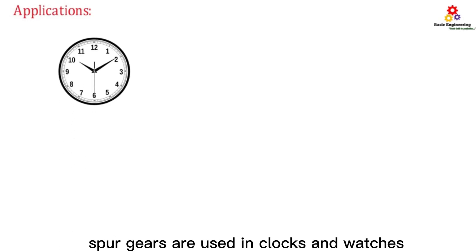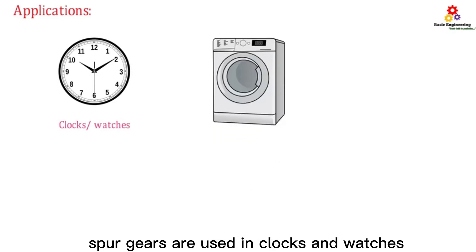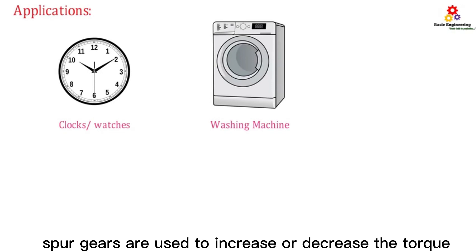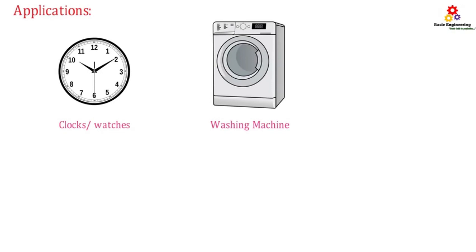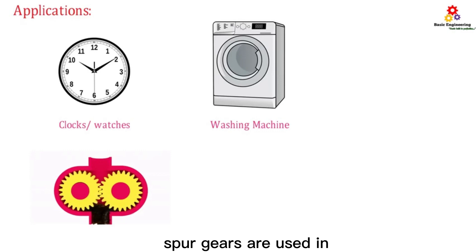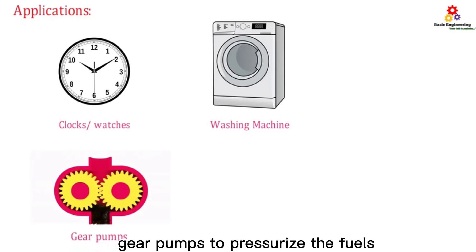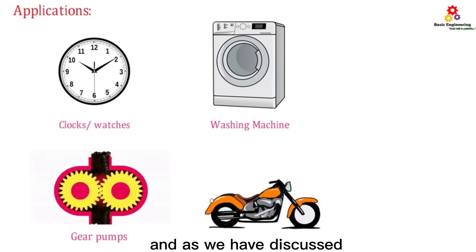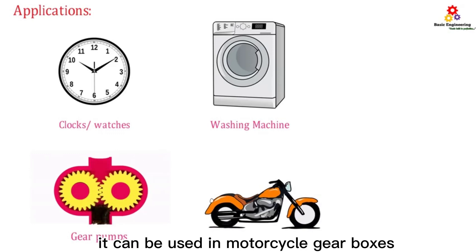Applications of spur gear: Spur gears are used in clocks and watches. In household applications like washing machines, spur gears are used to increase or decrease the torque. Spur gears are used in gear pumps to pressurize fluids, and they can be used in motorcycle gearboxes.